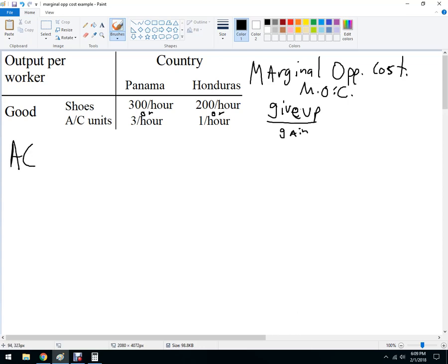So let's say we're talking AC units. So AC units for Panama. What can Panama do? So we just plug in the formula. What do they give up if they produce AC units or specialize in AC units? They would give up 300 shoes and they would gain three AC units. So this is going to be 300 over 3, so that's 100.